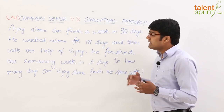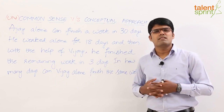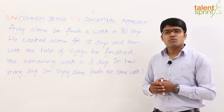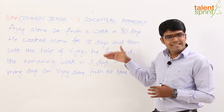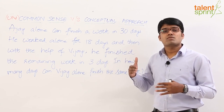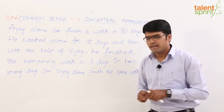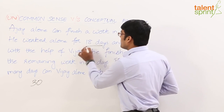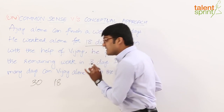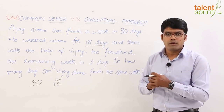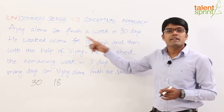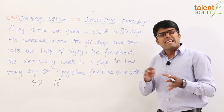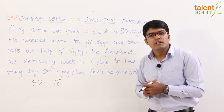But as I mentioned earlier, this question can be answered through simple common sense. Ajay can finish the work in 30 days. He worked alone for 18 days, which means he has to work for 12 more days to complete the remaining work. But then Vijay joined him, and with the help of Vijay he finished the remaining work in just 3 days. So for those 3 days, both Ajay and Vijay together were doing the work.